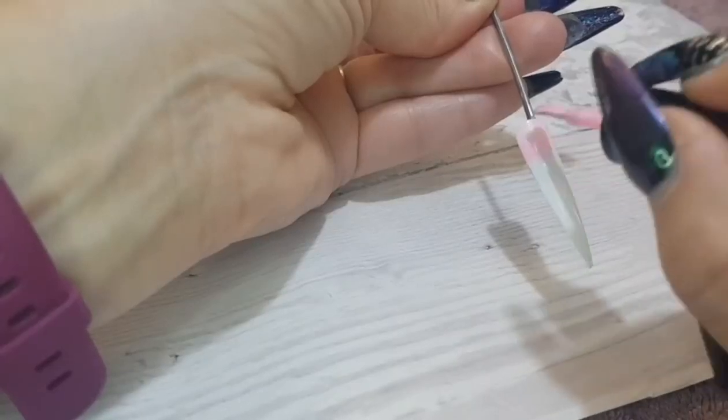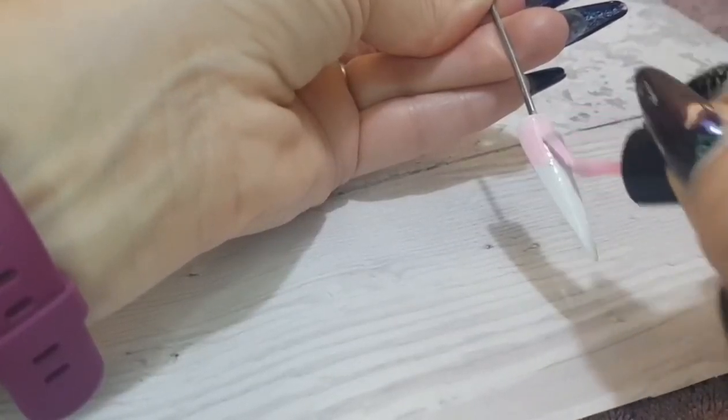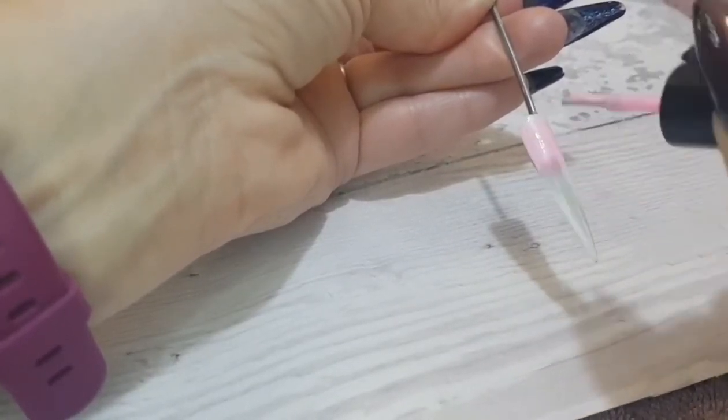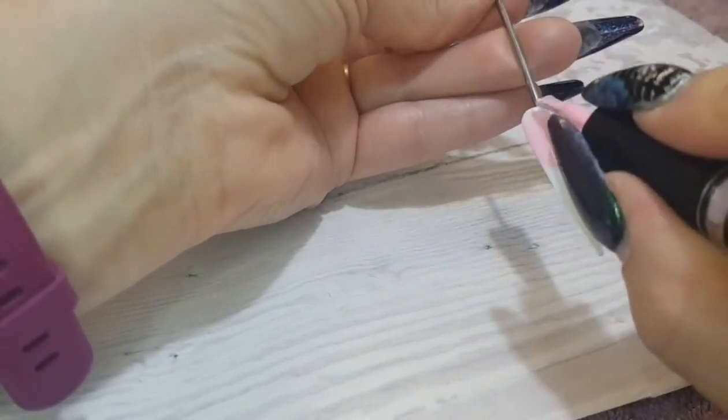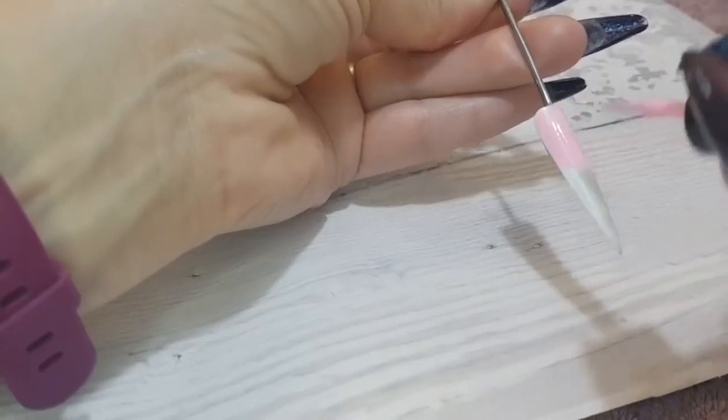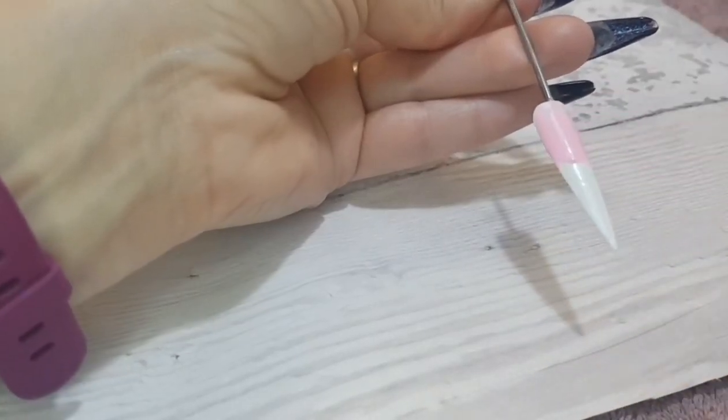That nail is now cured, and I'm now applying Halos French Pink just from the cuticle down to around the middle. I haven't got too much on my brush.